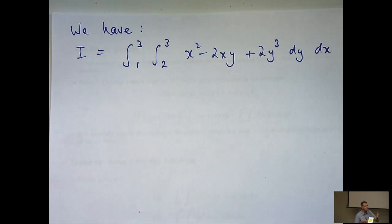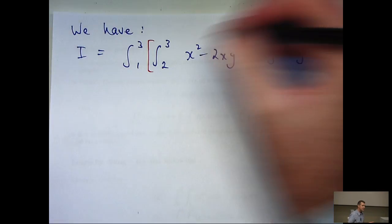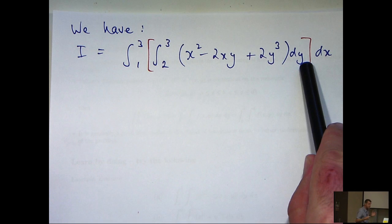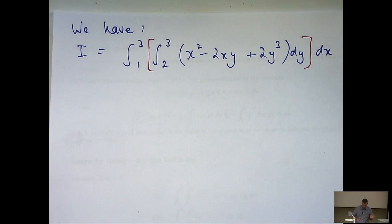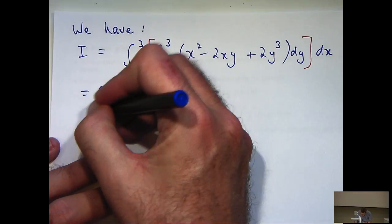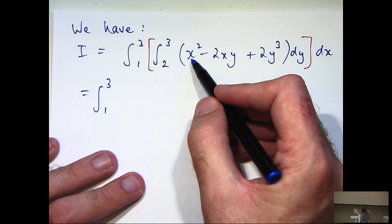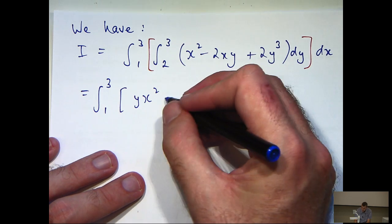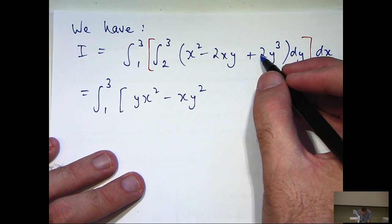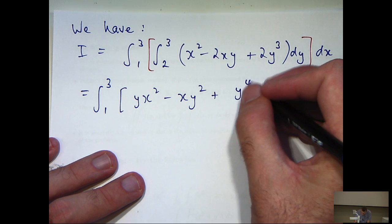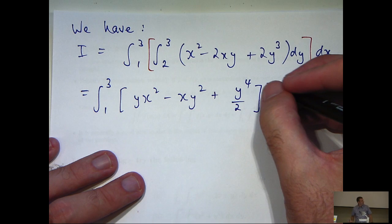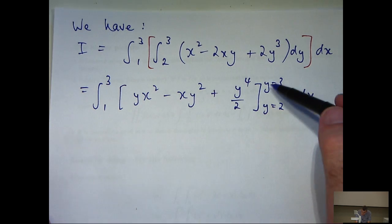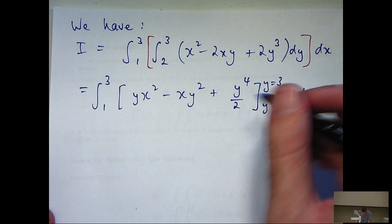So I'm just going to write out the integral again. If I put in my brackets and just consider the inside integral, what I do is, because we have a dy here, I hold x fixed and integrate each term with respect to y. So x squared will become yx squared, minus 2xy will become minus xy squared, and 2y cubed will become y to the fourth over two. And because it's a definite integral, we have to remember to make the appropriate substitutions for the limits of integration.